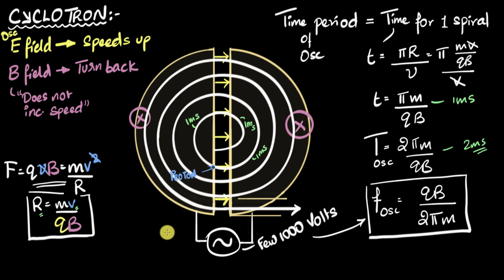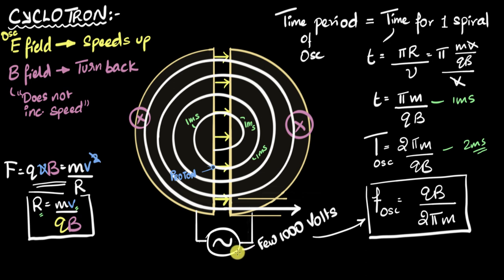Cyclotrons will only work as long as the speeds we're dealing with are much smaller than the speed of light. One or two percent the speed of light is still fine. But if you want particles to approach 50, 60, 90, or 99 percent the speed of light, then we need to find ways to adjust the frequency of the oscillator as the particle spirals out. Modern accelerators can do that — they're often called synchrotrons or synchro-cyclotrons, which means that the oscillators have to keep syncing to ensure they sync with the spirals of the protons.